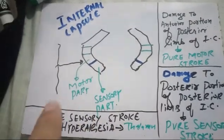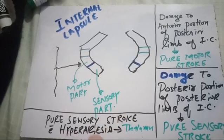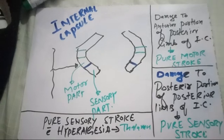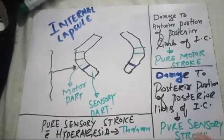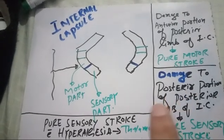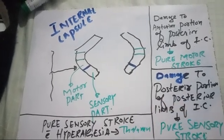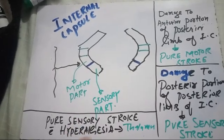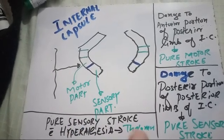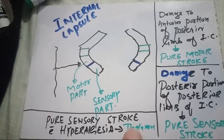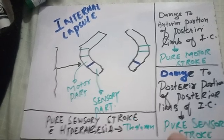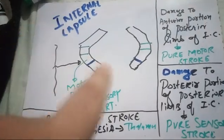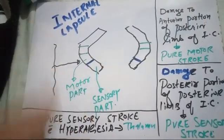Now there is another MCQ: pure sensory stroke with hyperalgesia — the site of stroke is the thalamus. Pure sensory stroke without hyperalgesia is the posterior portion of posterior limb of internal capsule. So with increased pain sensation it is thalamus; without increased pain sensation it is the posterior portion of internal capsule.